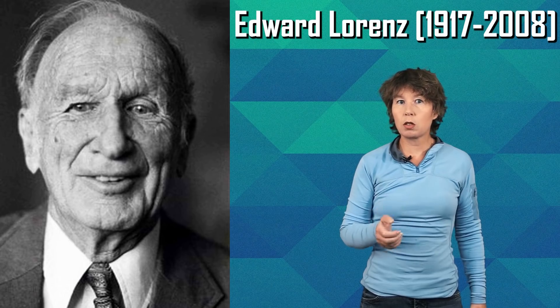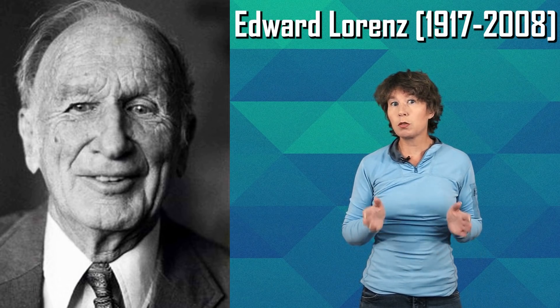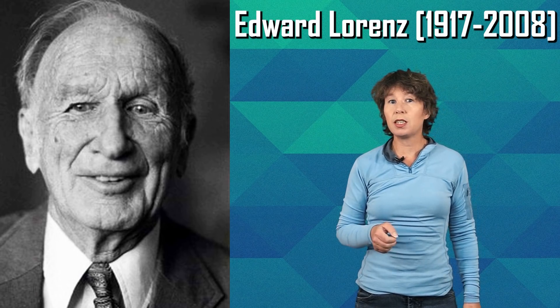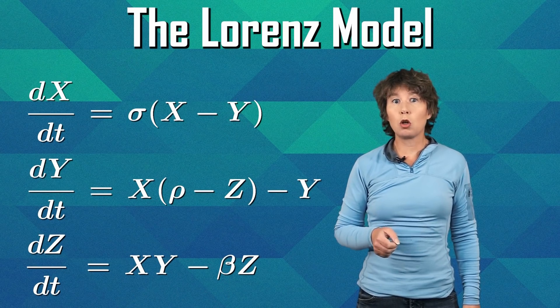Lorenz took his rather complicated set of equations and simplified it to a set of only three equations that nevertheless captures the strange behavior he had noticed. These three equations are now commonly known as the Lorenz model.